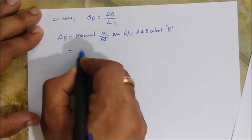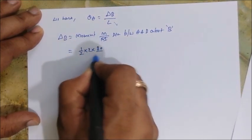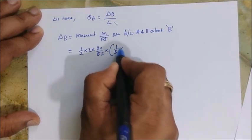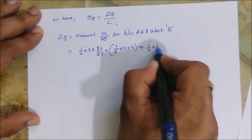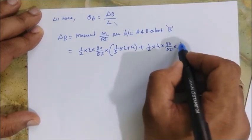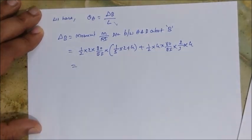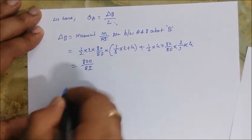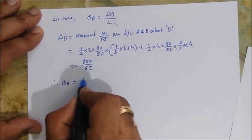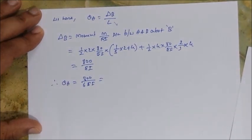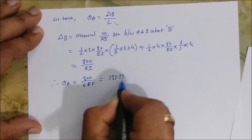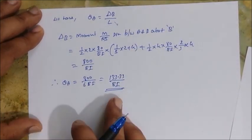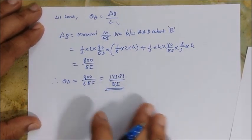For region 1: ½ × base × height × (1/3 of 2 + 4). For region 2: ½ × base × height × (2/3 of 4). Adding gives δ_B = 800/EI. Therefore θ_A = 800 / (6EI) = 133.33/EI. Notice that θ_A and θ_B are not the same because this is not a symmetrical structure.